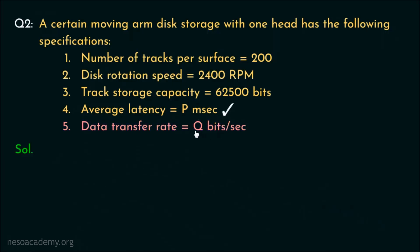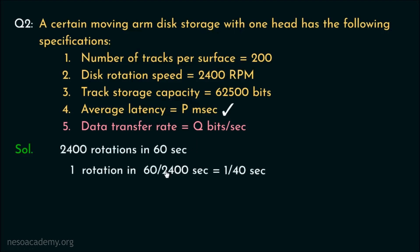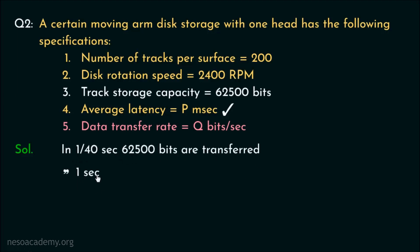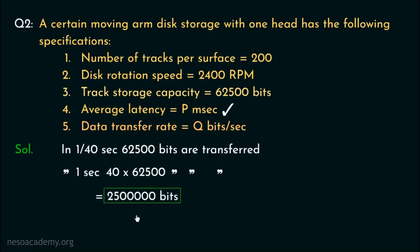Now let's find the value of q. We calculated that one rotation takes 1/40 seconds. The storage capacity of the tracks is given as 62500 bits. In one rotation, the read-write head can read an entire track. So in 1/40 seconds, 62500 bits are transferred. Therefore, in 1 second, 40 × 62500 bits are transferred, which results in 25 lakh bits. So this is the data transfer rate, and we have found the value of q.